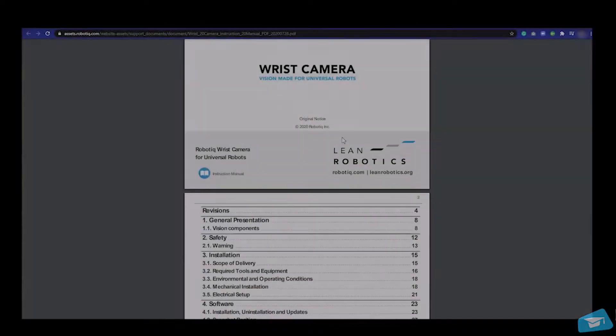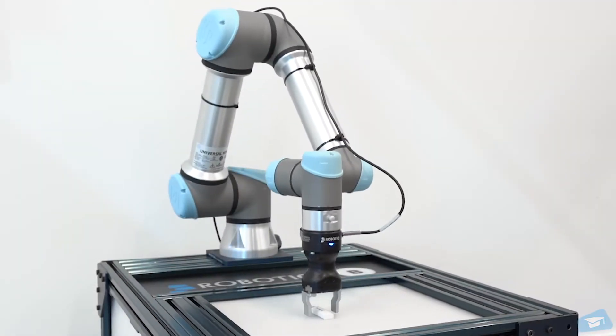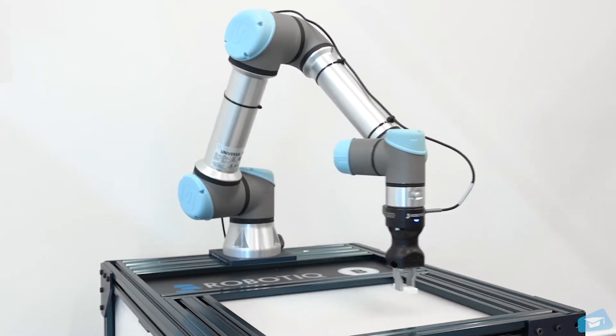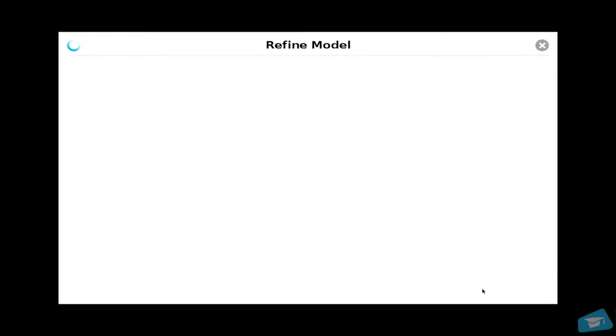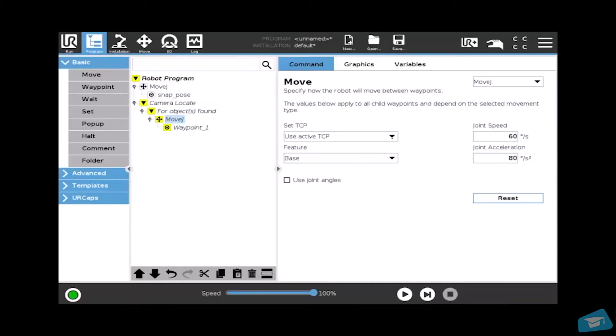Please refer to the wrist camera manual for more details. You are now ready to teach an object with the camera. See you next time to learn how to teach vision models and create a program for the parts you want to pick up.